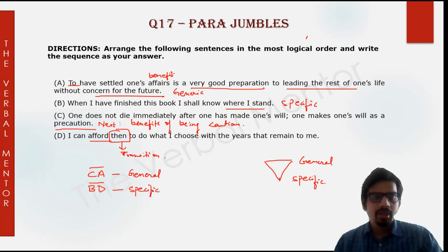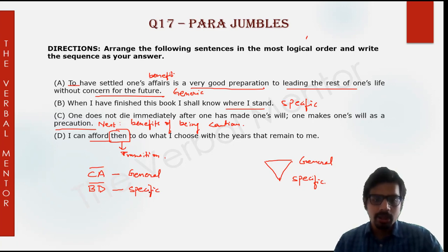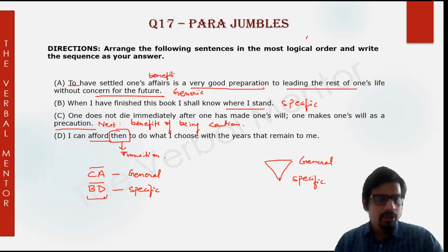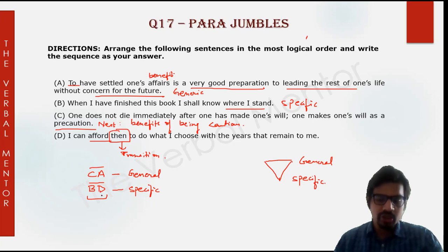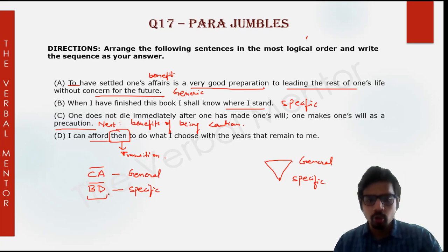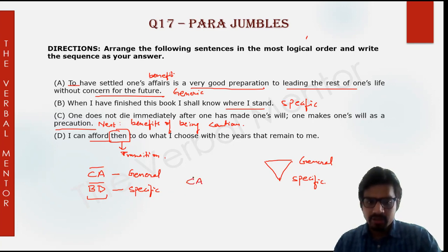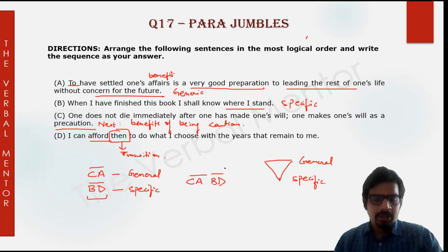First, he talks about the general benefits of being proactive and planning for the future — settling one's affairs so that one is free from concern. Then he talks about his particular book and how he chooses to finish it so that he can decide what to do with the remaining years of his life. Therefore CA first, BD next. Correct answer: CABD. Happy learning guys, keep improving, keep watching.